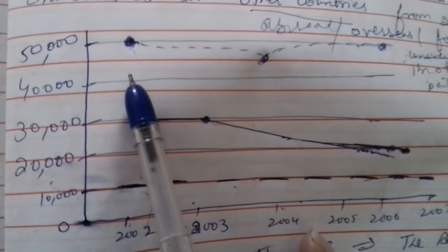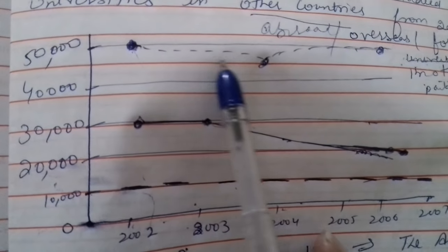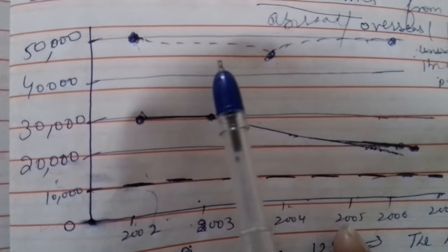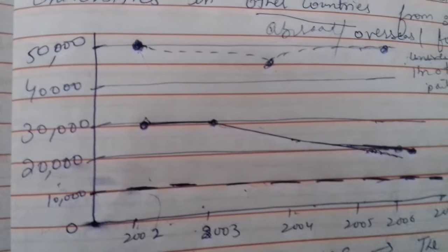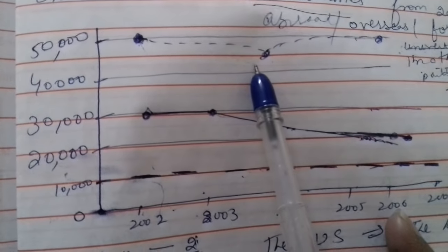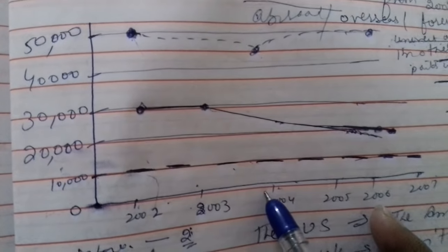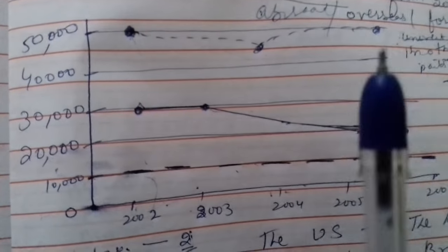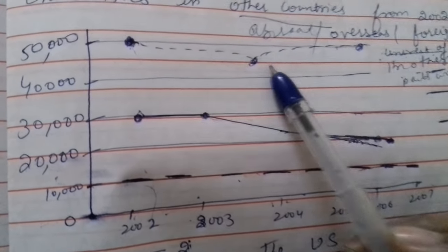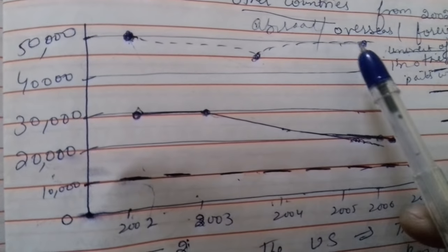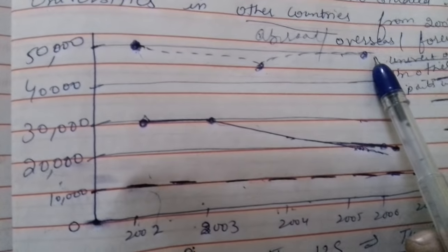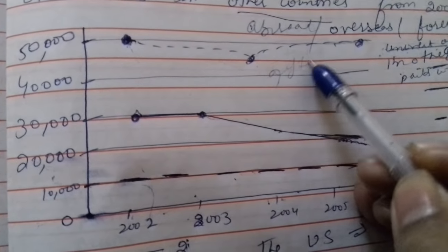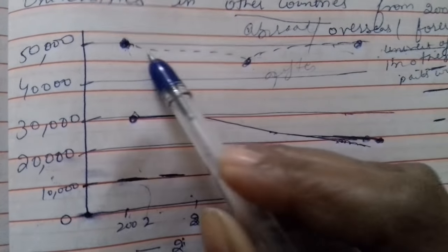First point: the number of students from America who studied abroad or in foreign universities was 50,000. Then you will say, after that, it decreased gradually. It showed a steady decline trend. And in 2004, the number of students was approximately 45,000 or 46,000. But after that, it reached again 50,000 in 2007. You can use 'after that' and 'again' to connect the points.